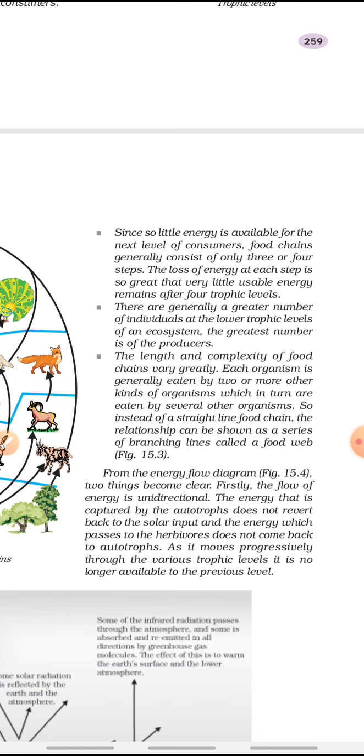From this diagram, two things become clear: food chain and food web. The energy flow is unidirectional. Energy flows from plant to primary consumer to secondary consumer. It cannot go from secondary consumer back to producer. It's a unidirectional flow of energy, only from producer level to consumer level. Energy captured by autotrophs does not revert back to solar input, and energy which passes to herbivores does not come back to autotrophs. As it moves progressively through various trophic levels, it is no longer available to the previous level.